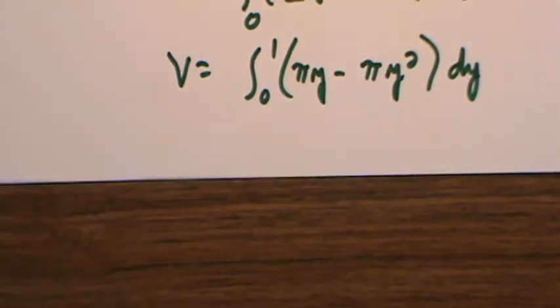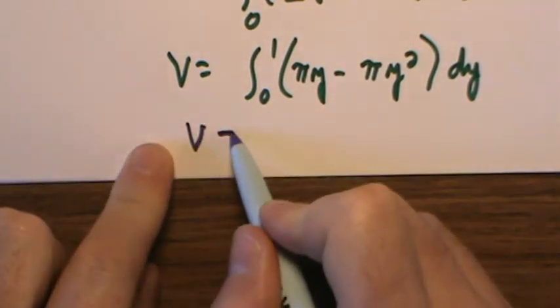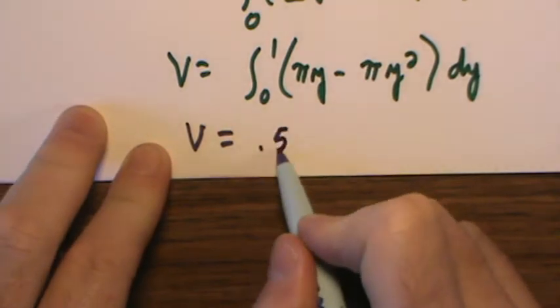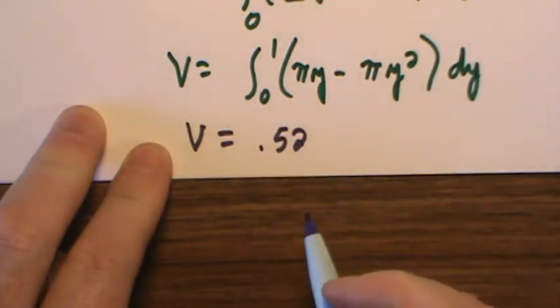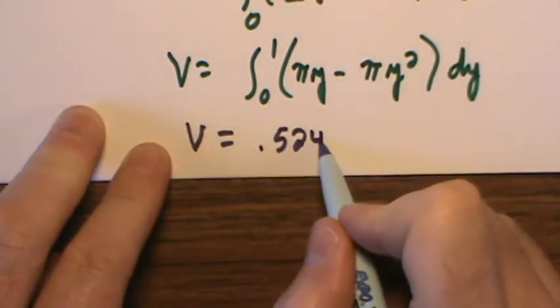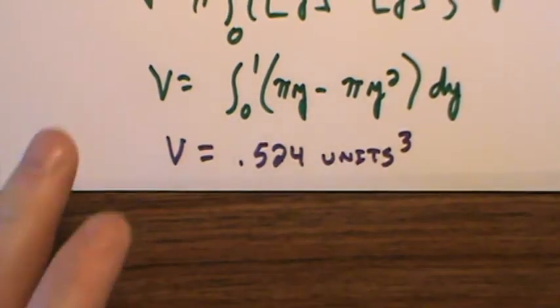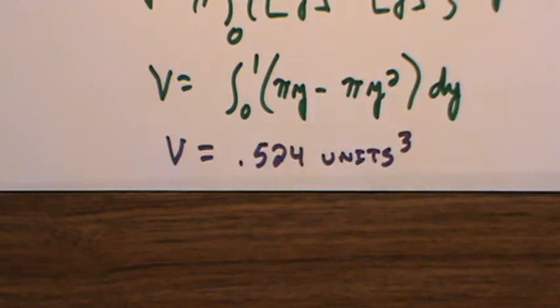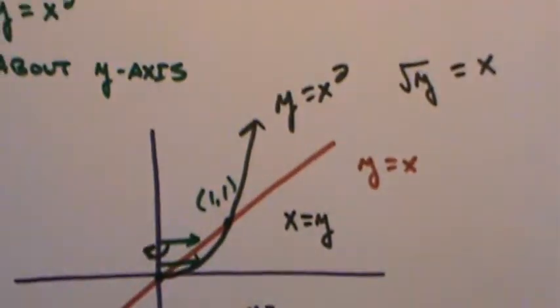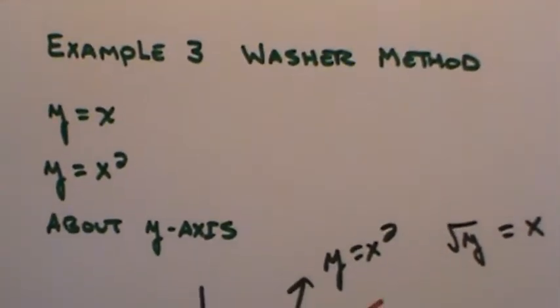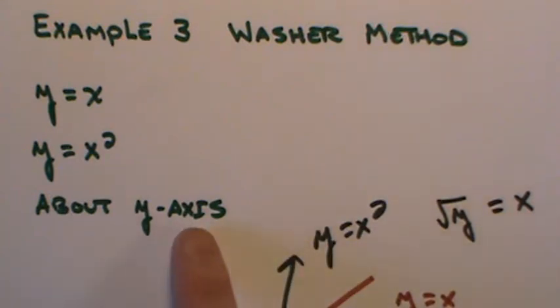Rounded appropriately, three decimal places. The volume will equal .524 units cubed. .524 units cubed. That's an example of the washer method where we went about the y-axis.